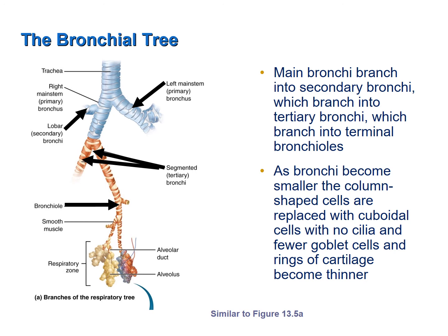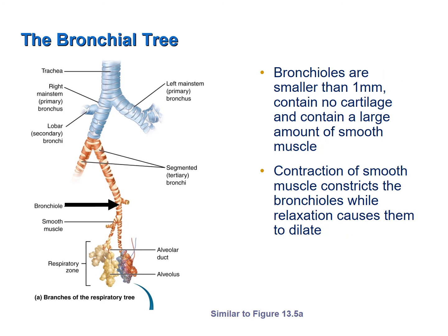This branching resembles a tree and is collectively referred to as the bronchial tree. As the bronchi become smaller, the columnar pseudostratified ciliated cells are replaced with cuboidal cells that have no cilia. There are also fewer goblet cells, so less mucus is produced. The rings of cartilage become thinner and thinner until they are completely absent in the bronchioles. Bronchioles are less than one millimeter in diameter, contain no cartilage, and have a large amount of smooth muscle that allows them to dilate when the muscle relaxes and constrict when it contracts.